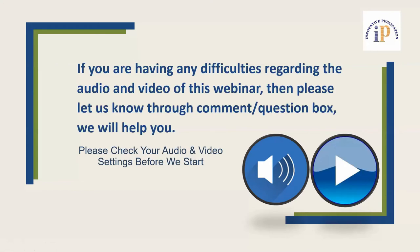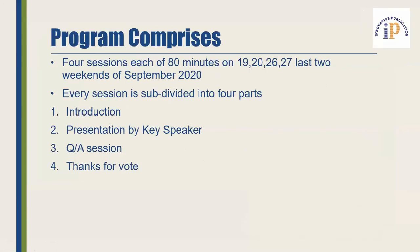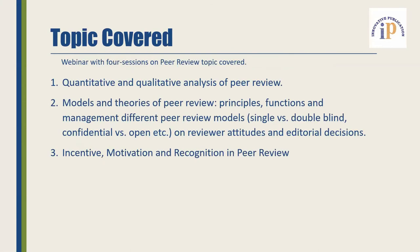Please check your audio and video settings before we start. This program comprises four sessions each of 80 minutes on the 19th, 20th, 26th, and 27th — the last two weekends of September 2020. Every session is subdivided into four parts: Introduction, Presentation by Key Speaker, Question-Answer Session, and Thank You. The quantitative topics covered in today's session are quantitative and qualitative analysis of peer review, models and theory of peer review, the principal functions and management of different peer review models, and incentive, motivation and recognition in peer review.